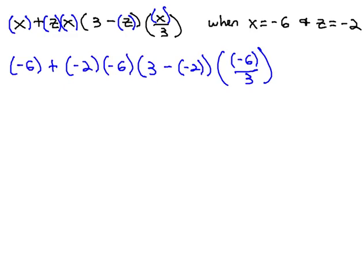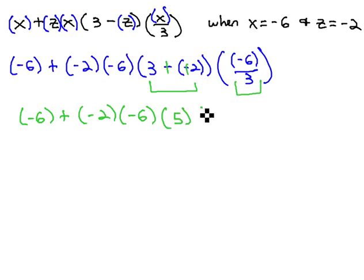And now, order of operation tells us to do the parentheses first. So, we have negative 6, plus negative 2, times negative 6. When we add the opposite, we get times 5, and negative 6 divided by 3 is negative 2.